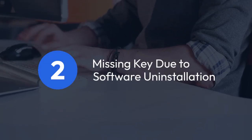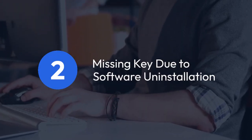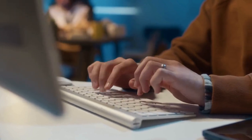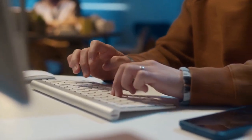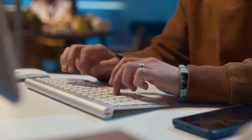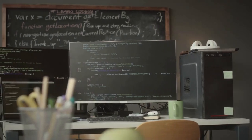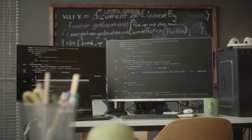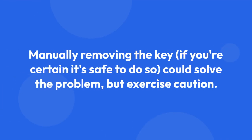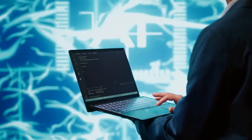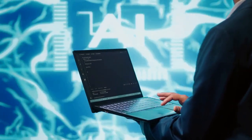2. Missing key. Due to software uninstallation — if the registry key is associated with a program, the program might have been uninstalled incompletely, leaving the key behind. Sometimes software uninstallation routines fail to remove all their related registry entries. Manually removing the key, if you're certain it's safe to do so, could solve the problem, but exercise caution. Incorrectly deleting registry keys can cause system instability.